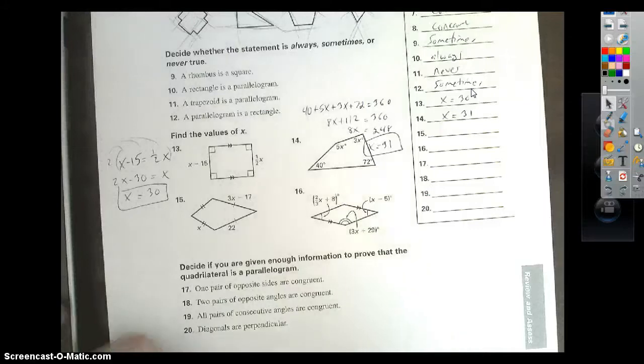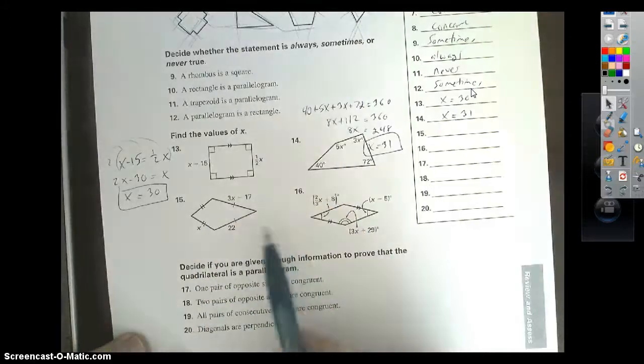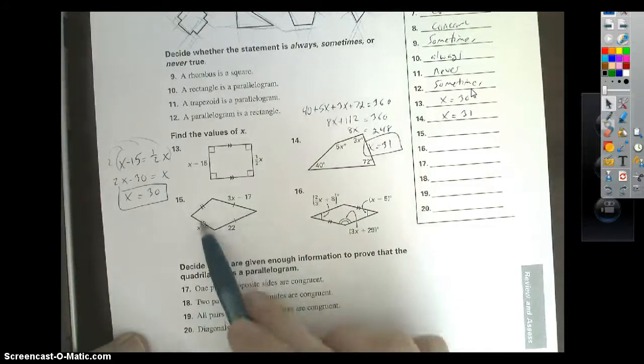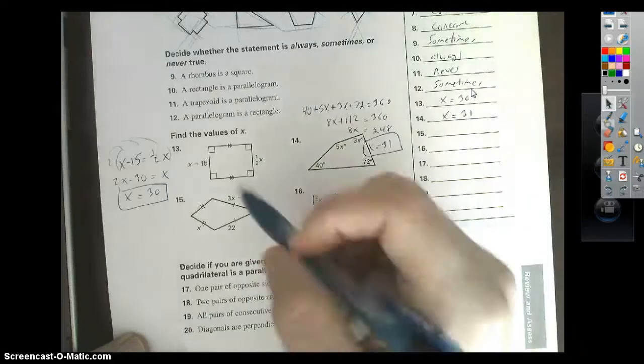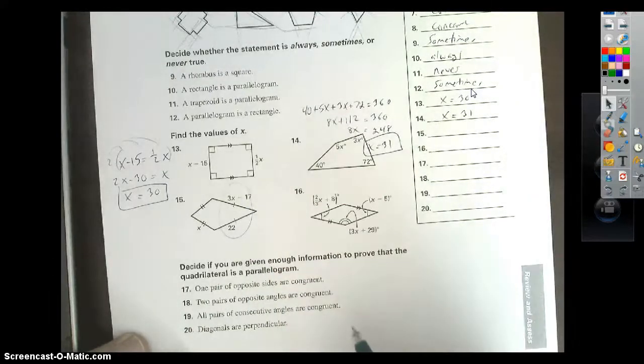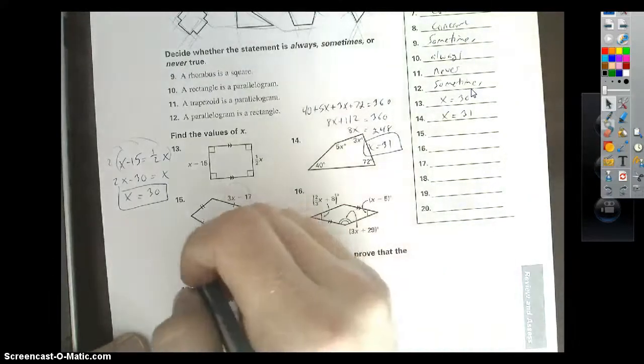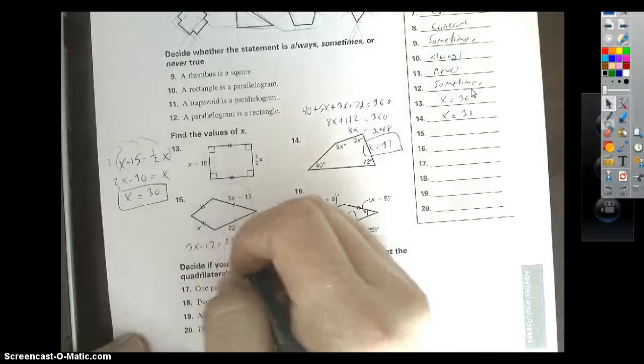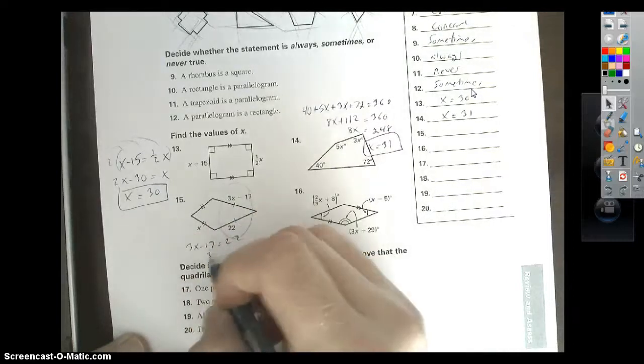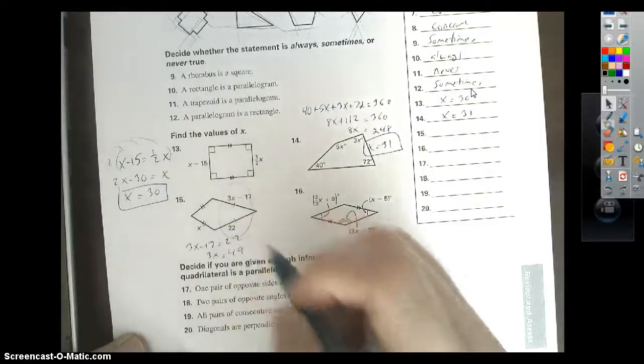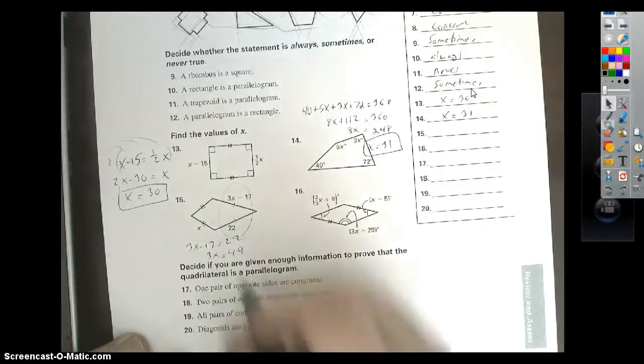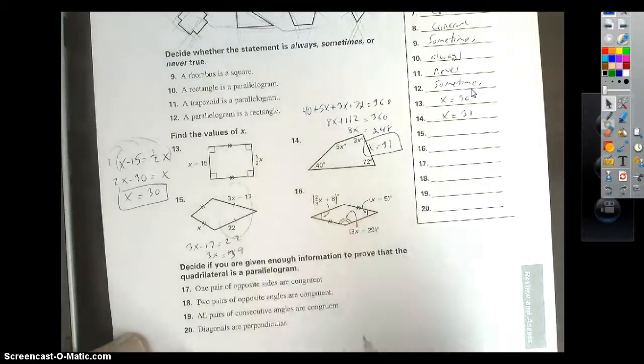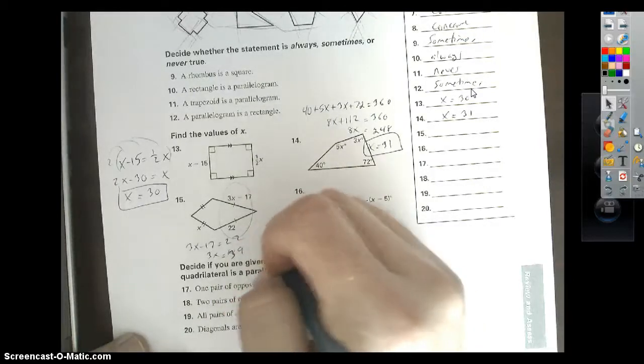Number 15. The tick marks here actually give away what you're looking for. These both sides are congruent. These two sides are congruent. So use this. 3x minus 17 equals 22. Add 17 over. 39. Divide both sides by 3. x equals 13.